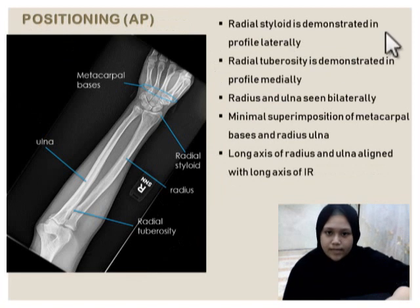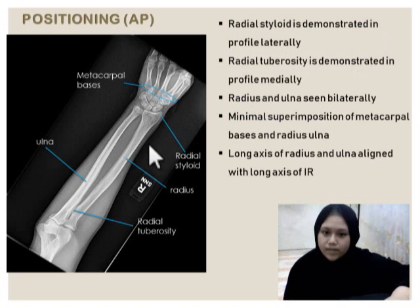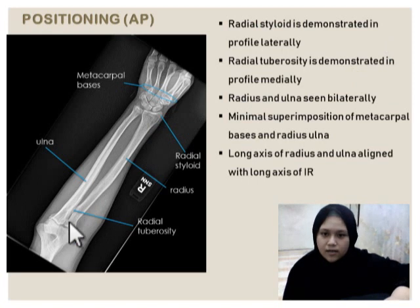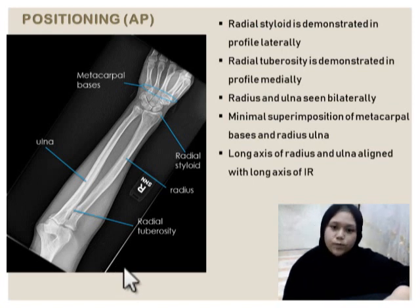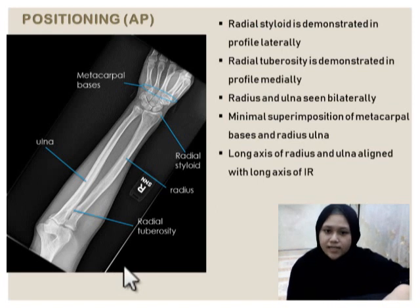Positioning for AP: radial styloid is demonstrated in profile laterally — this one is radial styloid. Radial tuberosity is demonstrated in profile medially — this one is radial tuberosity. Radius and Ulna seen bilaterally. Minimal superimposition of metacarpal basis and Radius Ulna, and low edges of Radius Ulna aligned with low edges of IR.